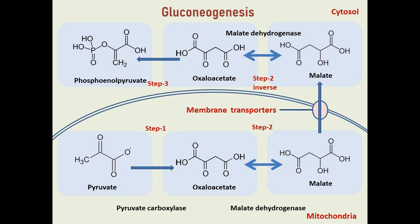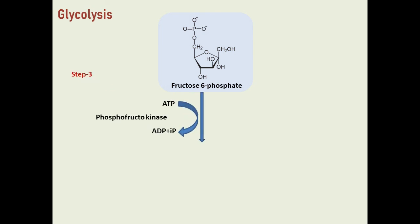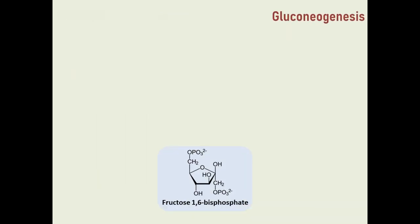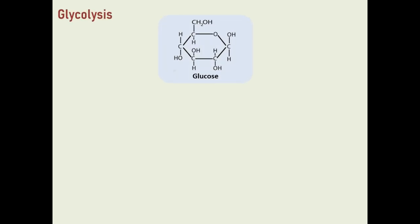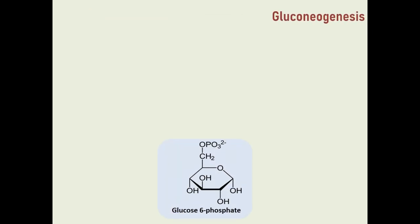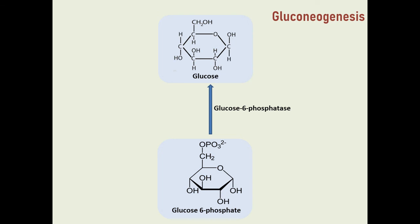The next several steps are exactly the same as glycolysis, only the process is in reverse. The second step that differs from glycolysis is the conversion of fructose 1,6-bisphosphate to fructose 6-phosphate with the enzyme fructose 1,6-bisphosphatase. The conversion of fructose 6-phosphate to glucose 6-phosphate uses the same enzyme as glycolysis, phosphoglucoisomerase. The last step that differs is the conversion of glucose 6-phosphate to glucose with the enzyme glucose 6-phosphatase, which is located in the endoplasmic reticulum.